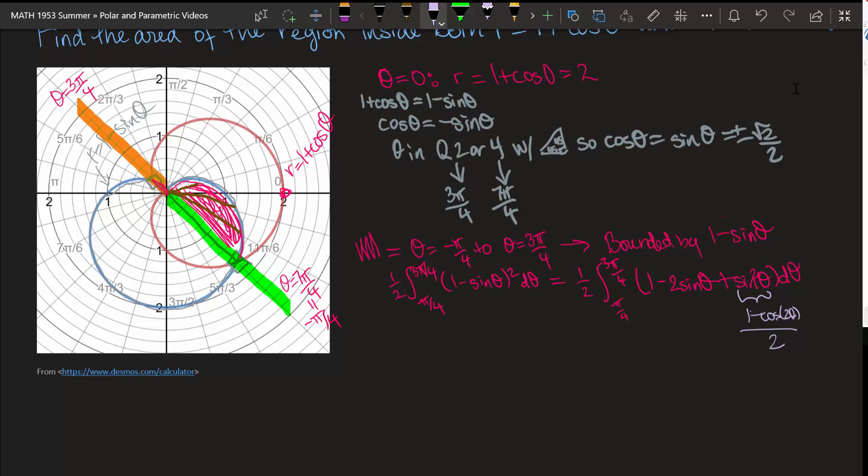Some people do it with a U substitution as well at this point. So then I'll just write dot, dot, dot. We'd go from there. Okay, let's go back and let's look at the other region.